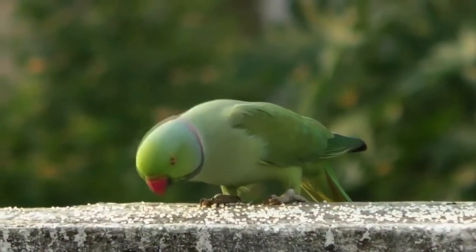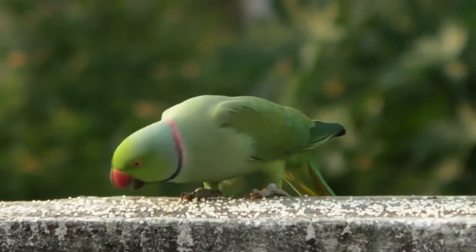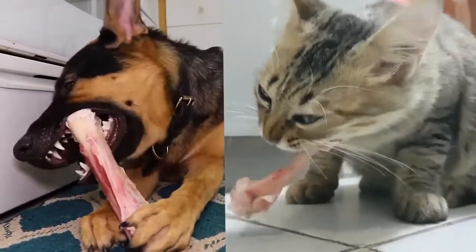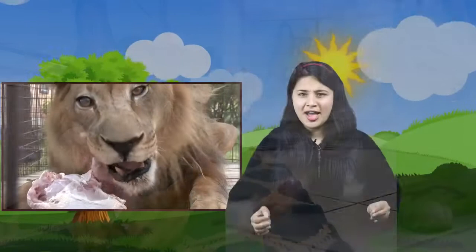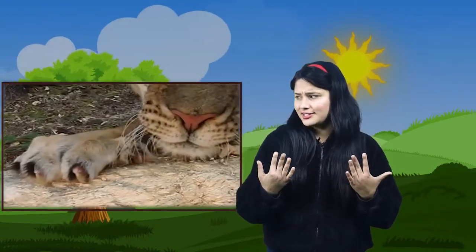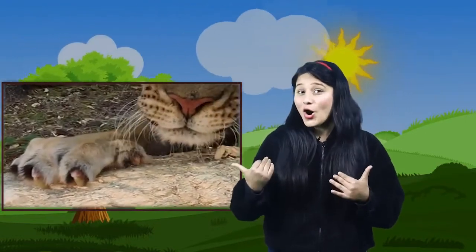Dogs and cats have strong teeth and claws. Human beings do not have sharp and strong teeth and nails like other carnivorous animals, but we are also omnivorous animals.